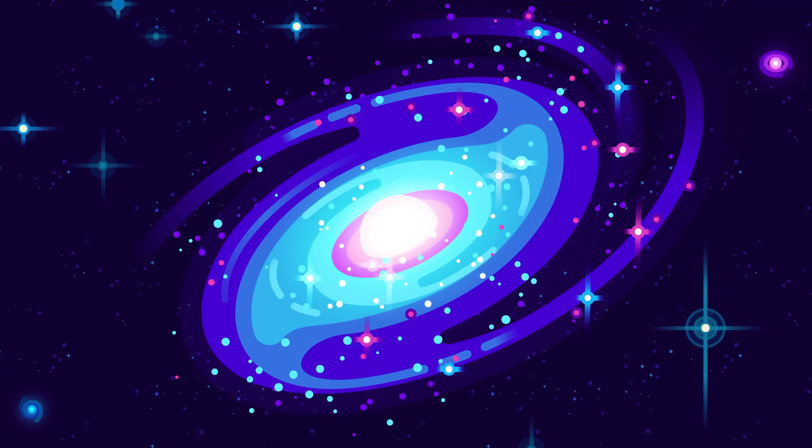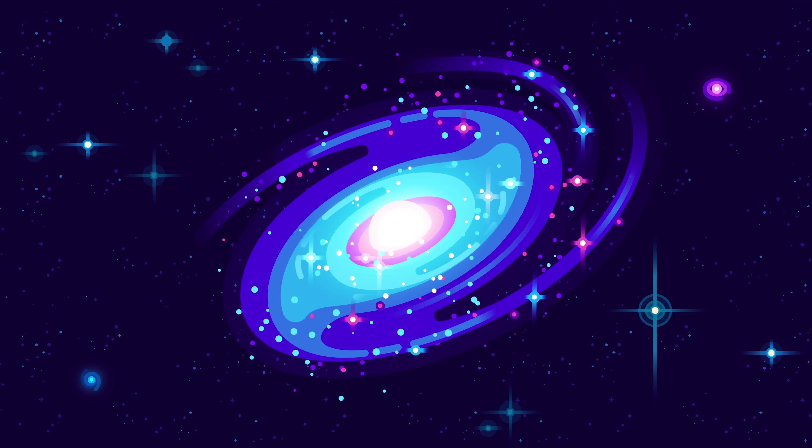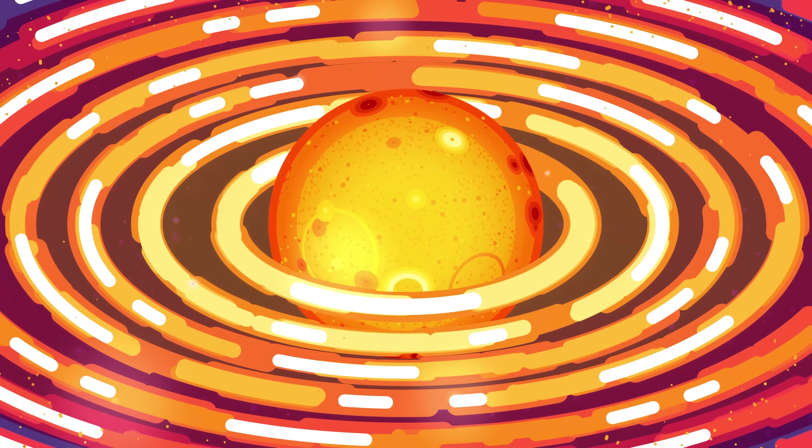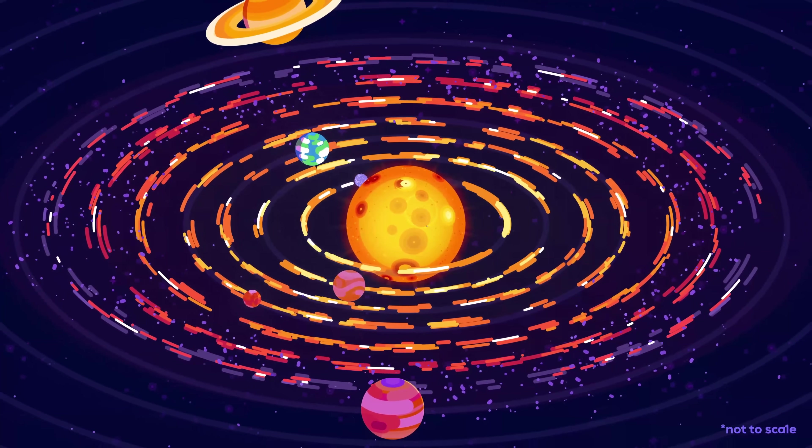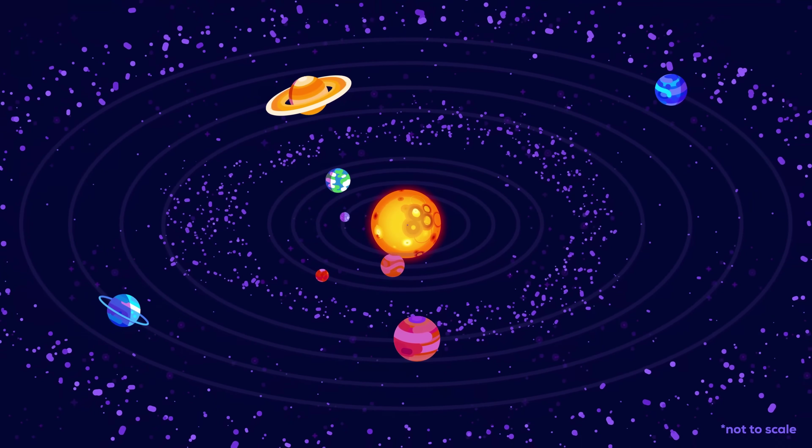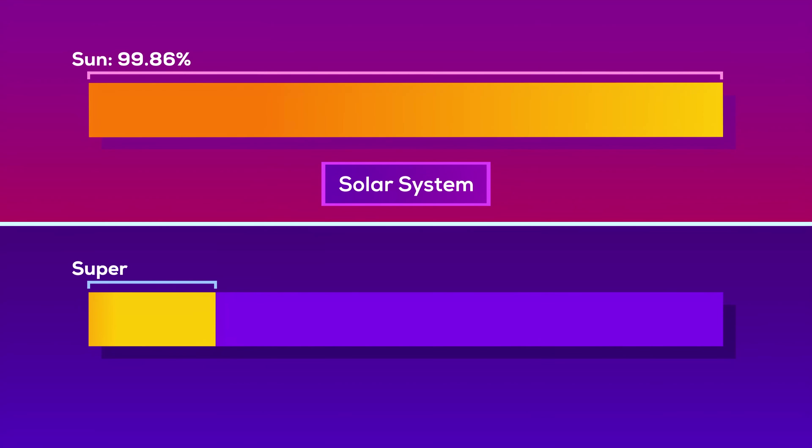Because supermassive black holes are so massive and located at the center of galaxies, many people imagine them as being a bit like the sun in the solar system. An anchor that glues everything else together and forces it into an orbit. But this is a misconception. While the sun makes up 99.86% of all the mass in the solar system, supermassive black holes usually only have 0.001% of the mass of their galaxy.